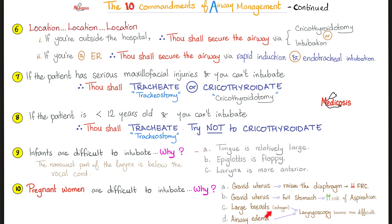Large breasts because of estrogen make laryngoscopy more difficult, and there could also be airway edema. If you want to add commandment number eleven: obesity is a risk factor — it makes it difficult to intubate. If the patient is morbidly obese, think of plan B before thinking of plan A.